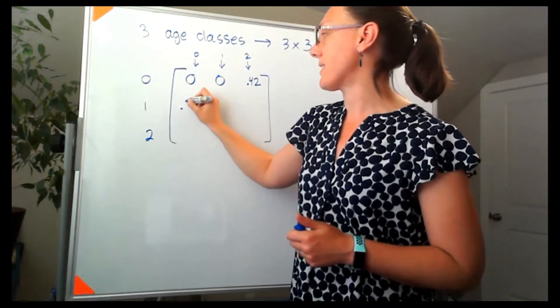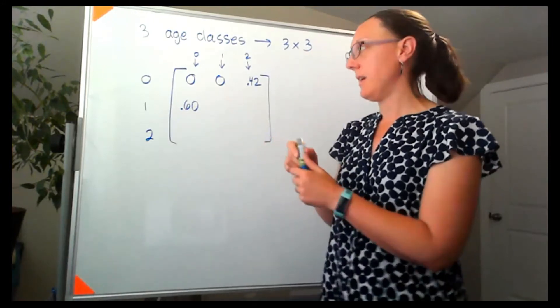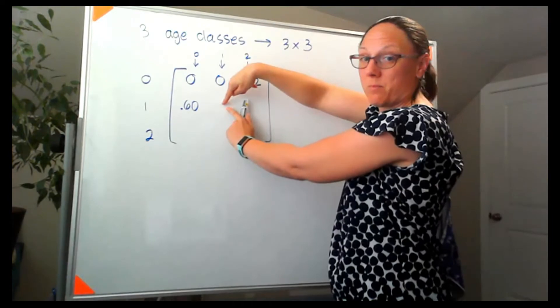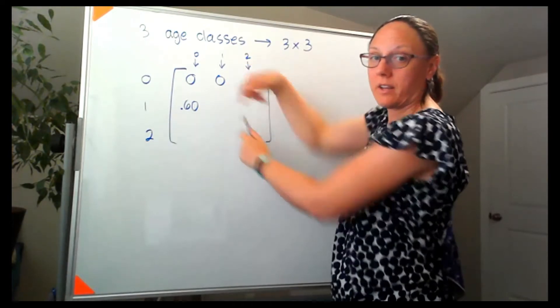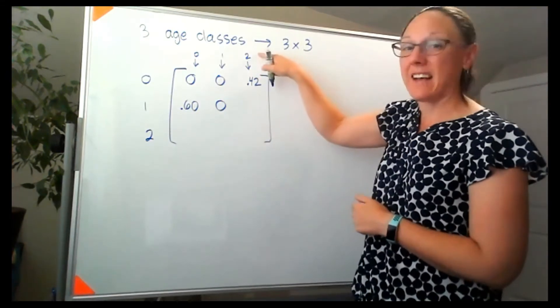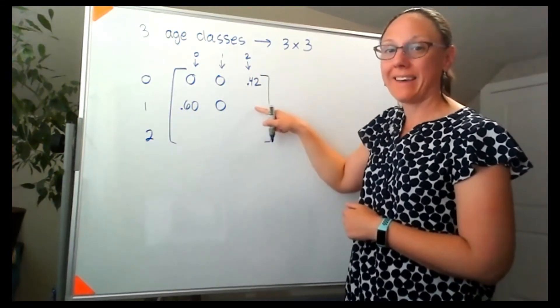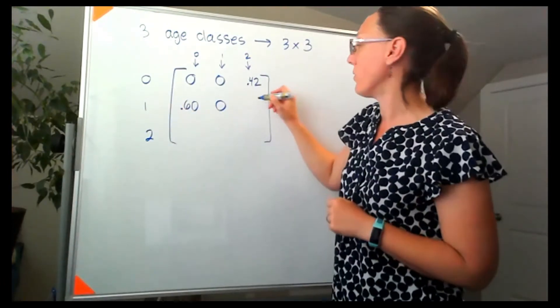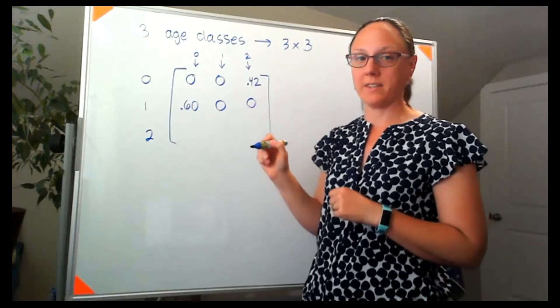So this would be 60%. Now age class 1 can't stay age class 1. They're going to have to grow up. So this would be a 0. Age class 2 can't go back in age and suddenly become an age class 1 individual. So that would also be 0.